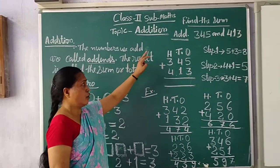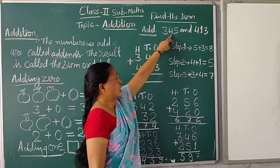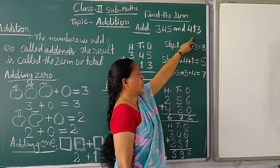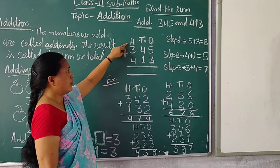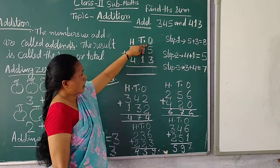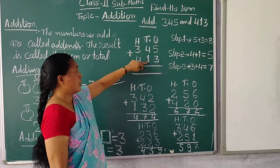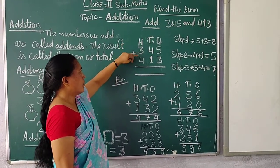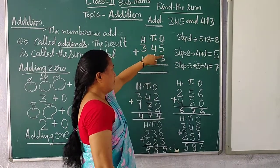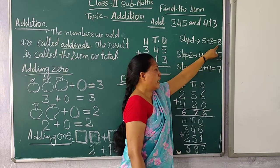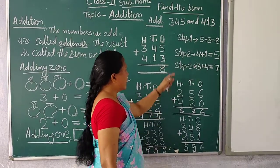Two plus one equals three. So we are adding number one. So find the sum of numbers to add. We add three hundred forty-five and four hundred thirty. In the ones place, the number is five plus three. First step: five plus three equals eight. So we write eight in the ones place.